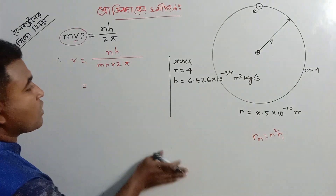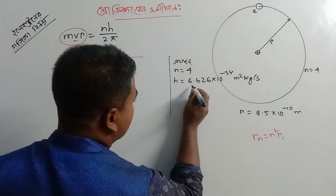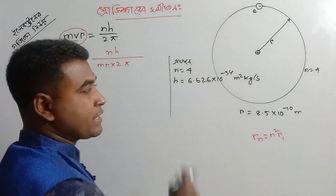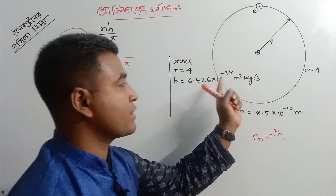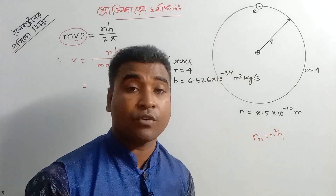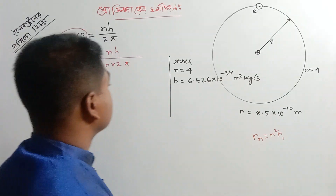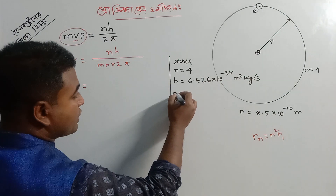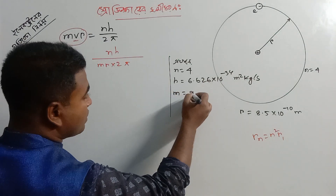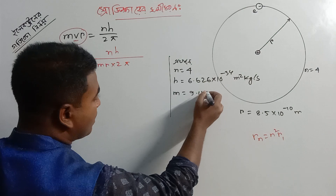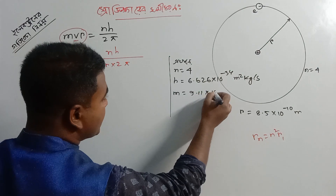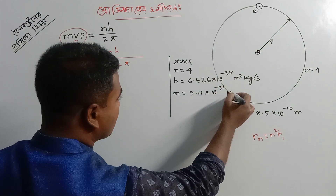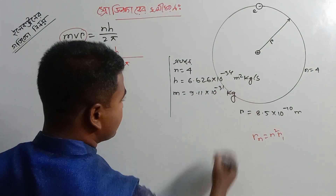This is equal to Max Planck's constant, which means 6.626 into 10 to the power minus 34. The mass of the electron means 9.00 into 10 to the power minus 31 kg.